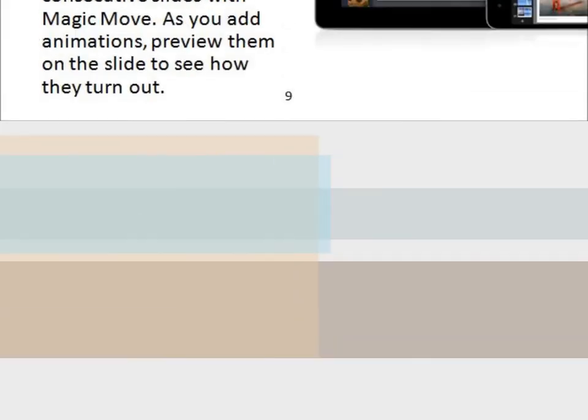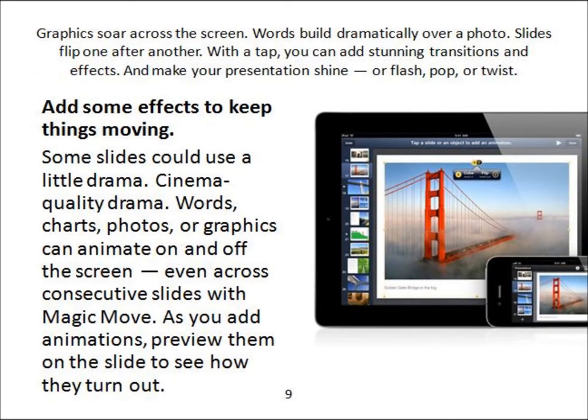Graphics fly across the screen, words dramatically move over a portal, slides flip one after another. With a tap, you can add stunning transitions and effects — make your presentation shine, flash, pop, or twist. Add effects to keep things moving. Some slides could use a little drama — cinematic-quality drama. Words, charts, photos, or graphics can animate on and off the screen, even across consecutive slides with Magic Move. As you add animations, preview them on the slide to see how they turn out.